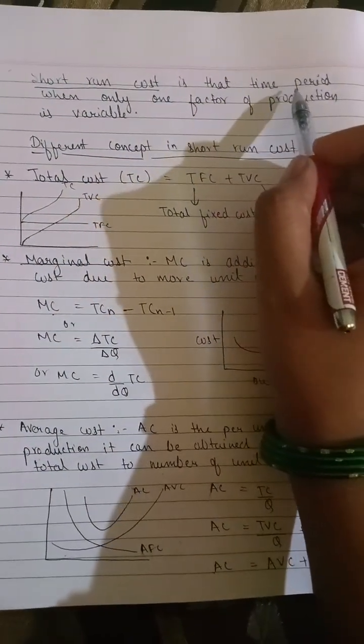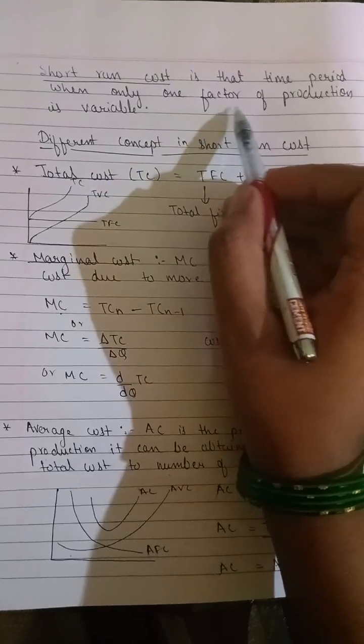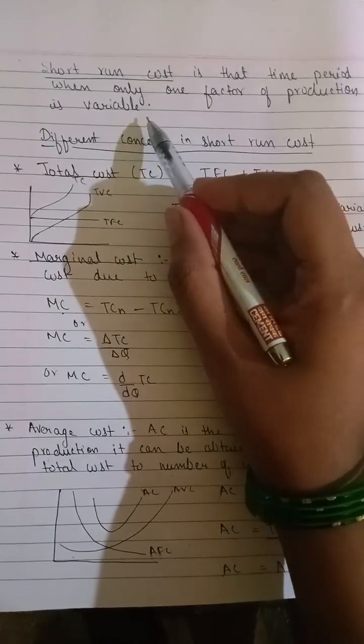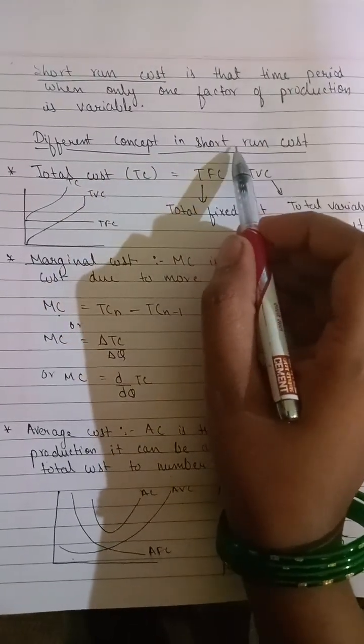Short run cost is that time period when only one factor of production is variable. Different concepts in short run cost: